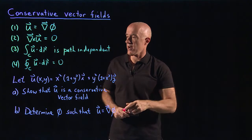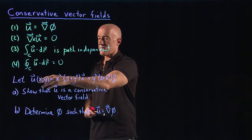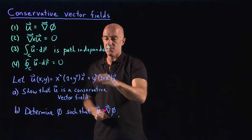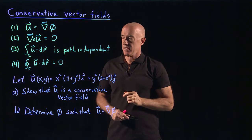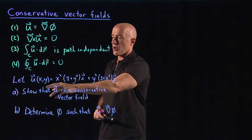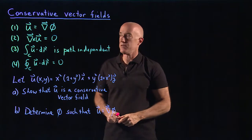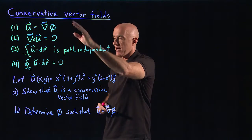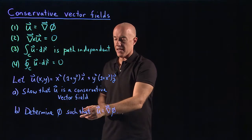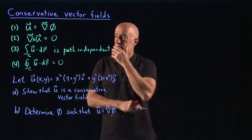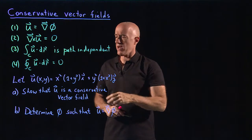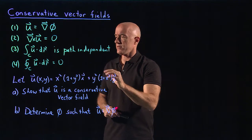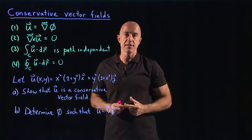The problem we want to solve: let the vector field u of x, y equal x squared times (1 plus y cubed) i plus y squared times (1 plus x cubed) j. I want to show that u is a conservative vector field satisfying these four conditions, and we want to determine phi such that u equals del phi. The easiest way to determine whether u is conservative is to take the curl of u and see if it's equal to zero — that's just a straightforward calculation.